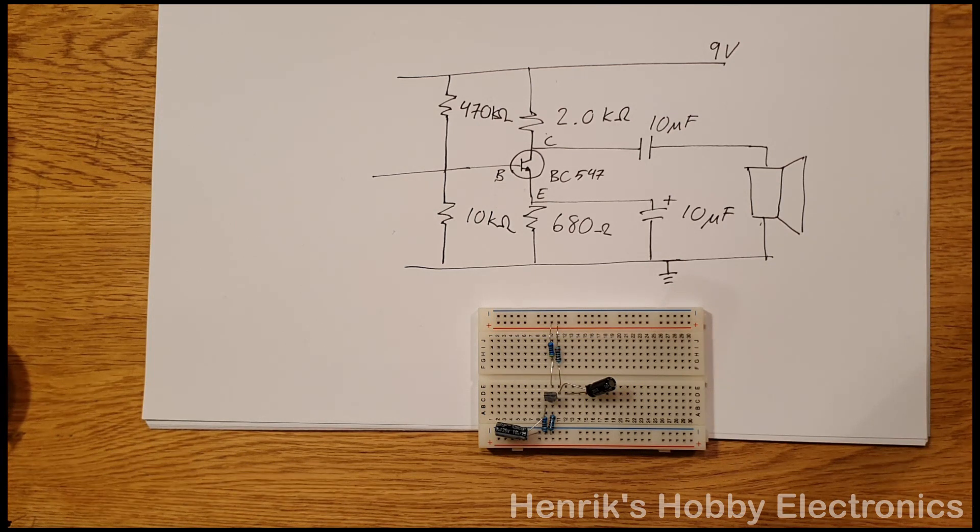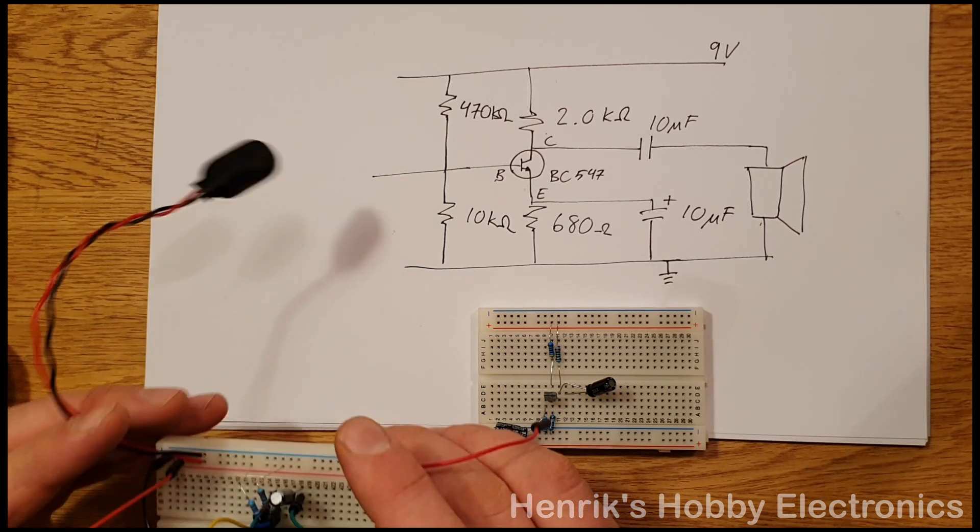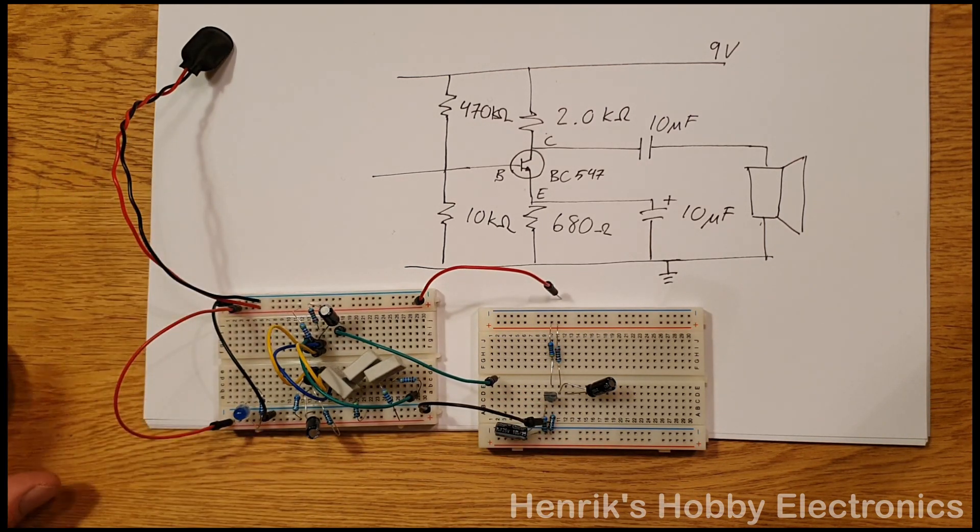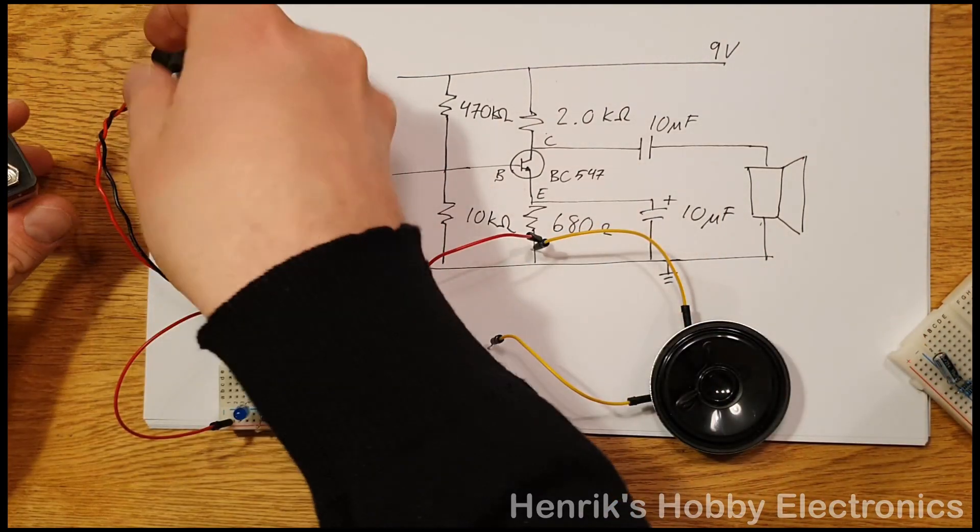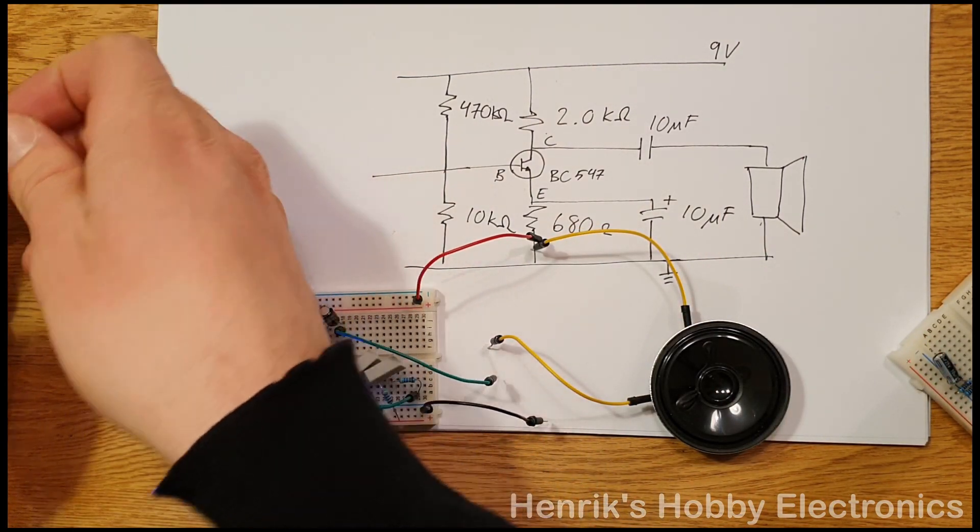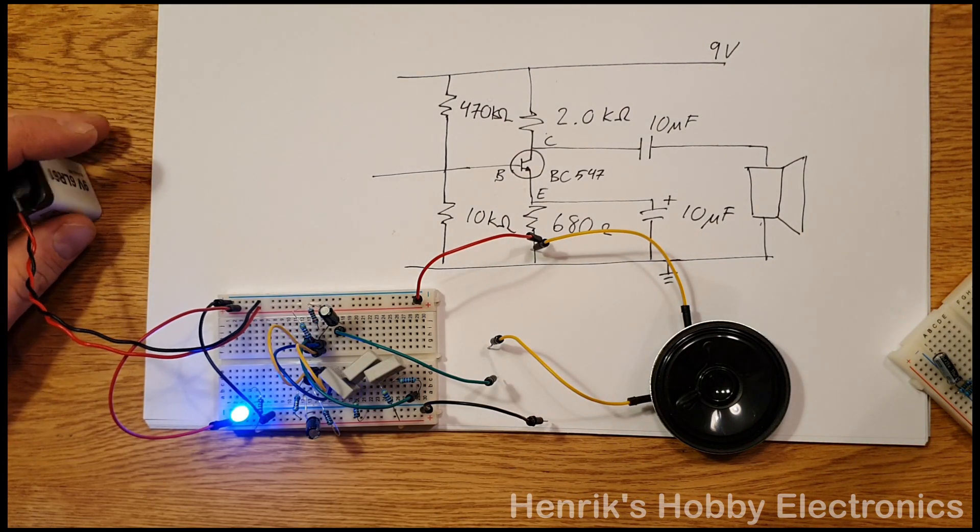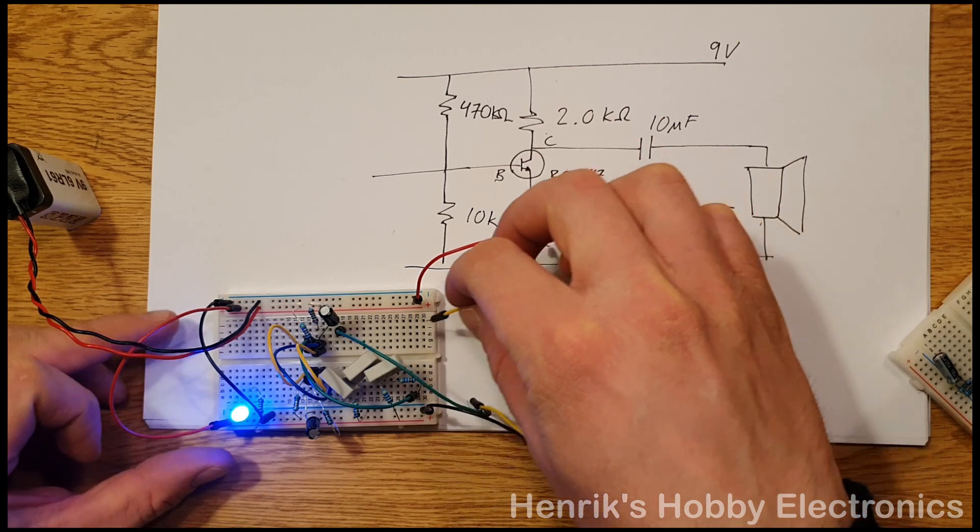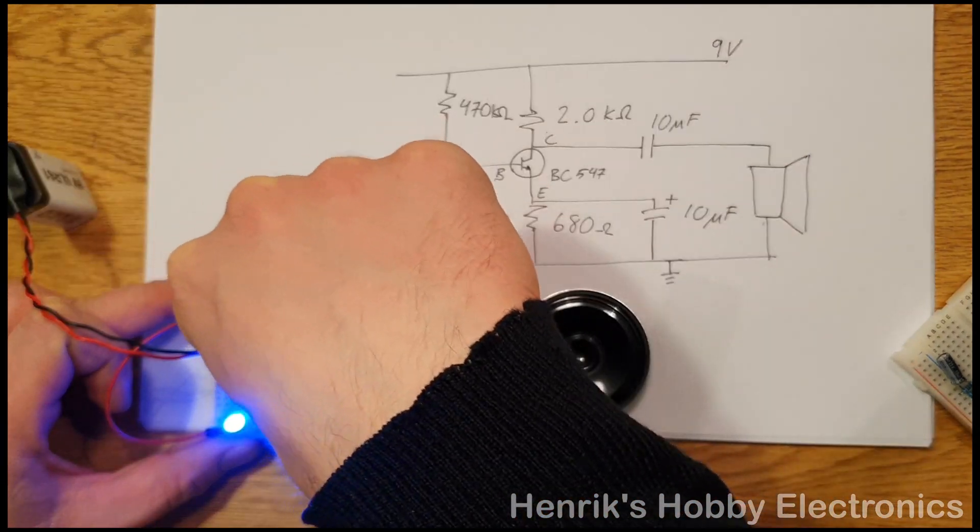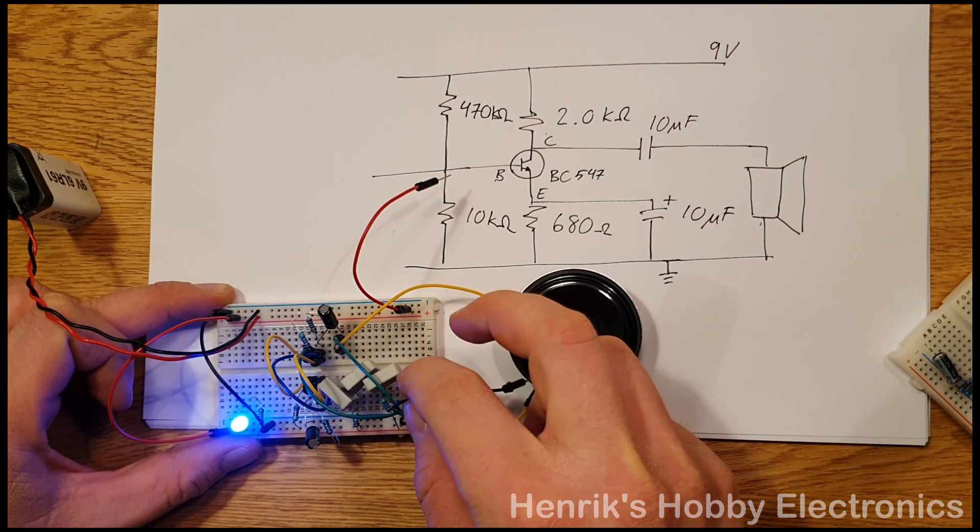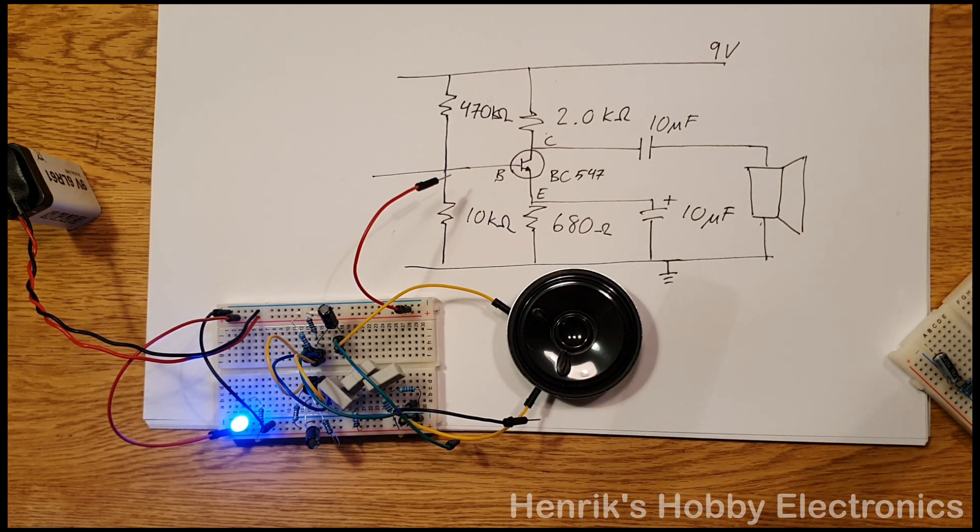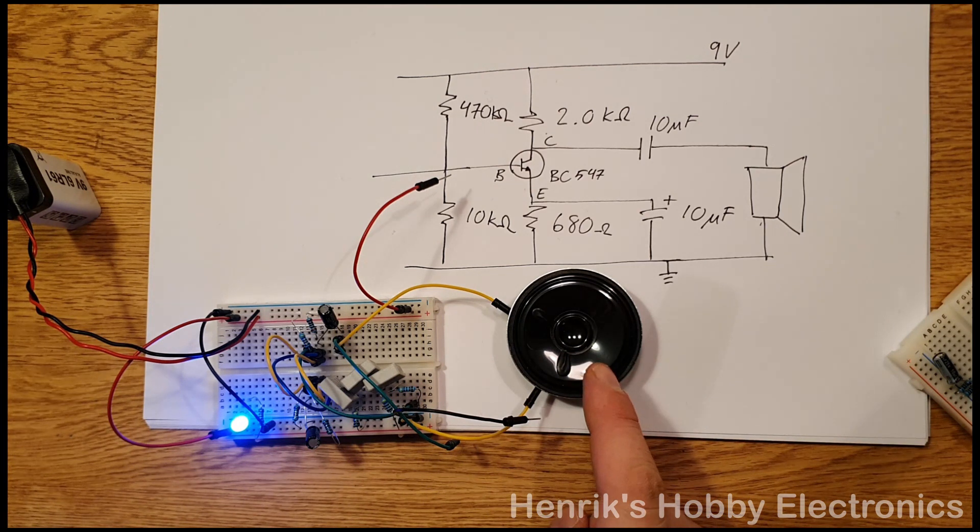And now to listen to a signal that we've amplified through this amplifier, I have made an audio oscillator which creates a tone for us to listen to. To start with we'll connect the oscillator directly to the loudspeaker. Now if we connect the loudspeaker like this, it will be difficult for you on the video to hear any sound, but if you would put your ear to the loudspeaker you would be able to hear a faint sound.